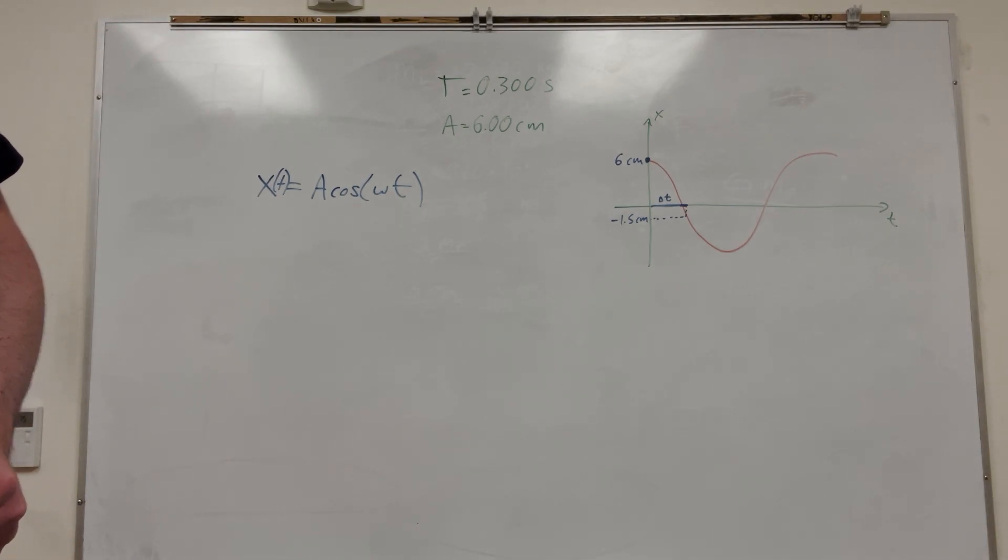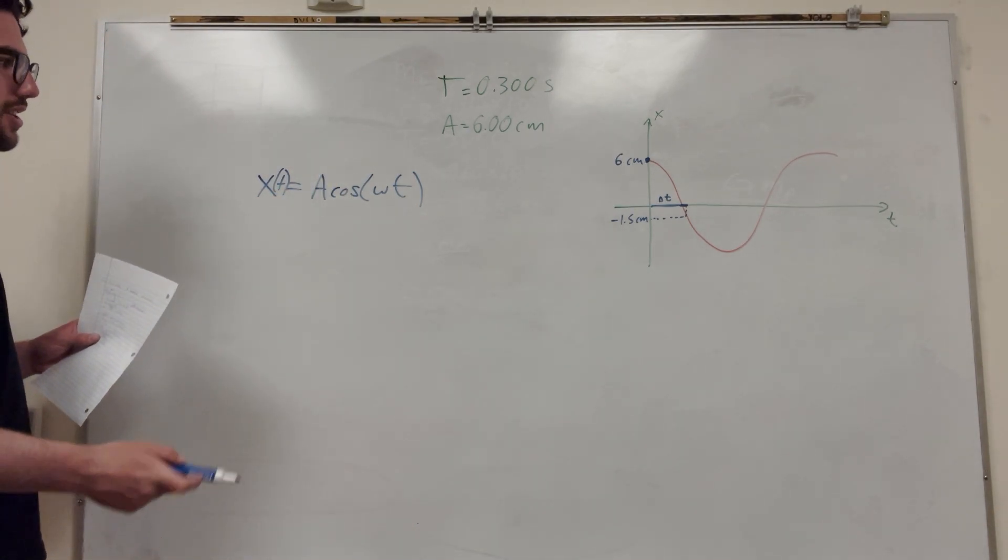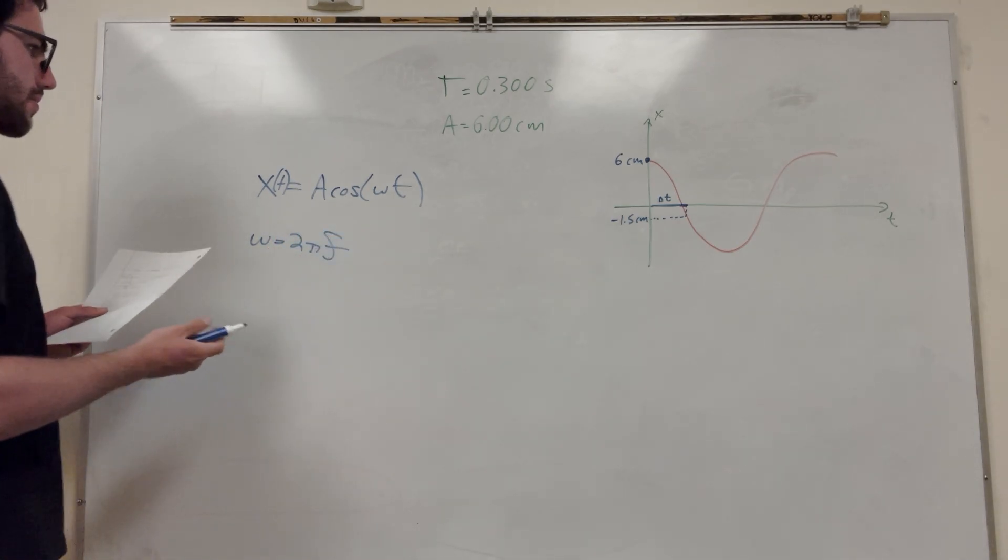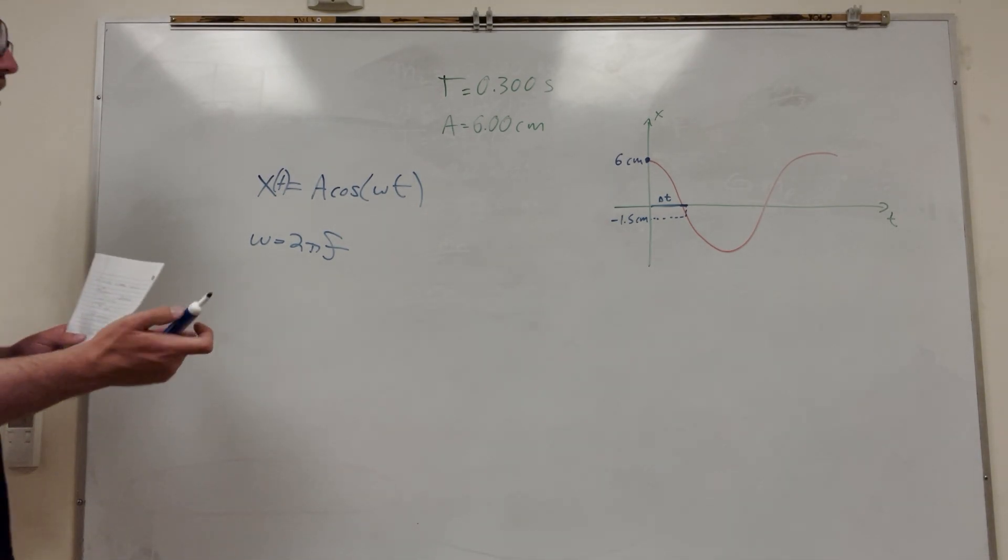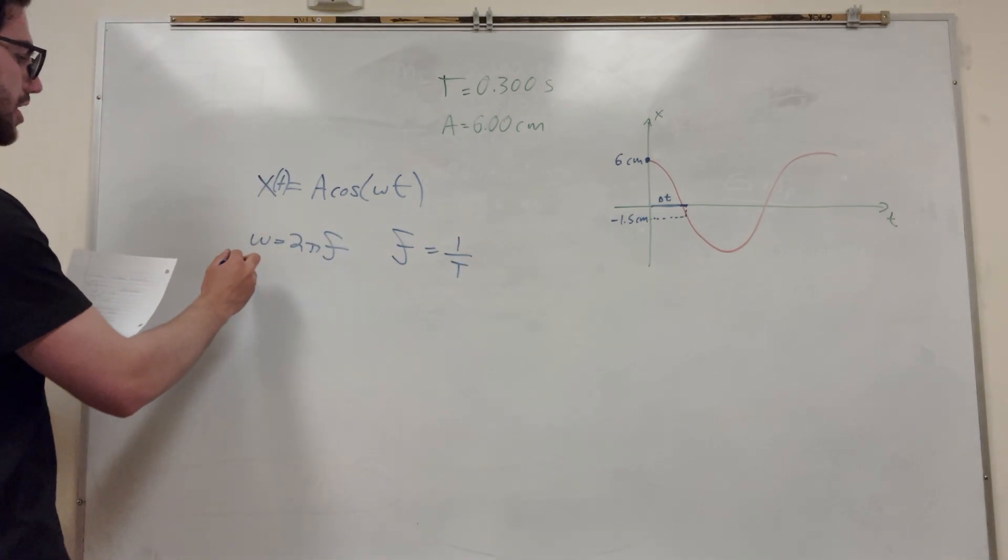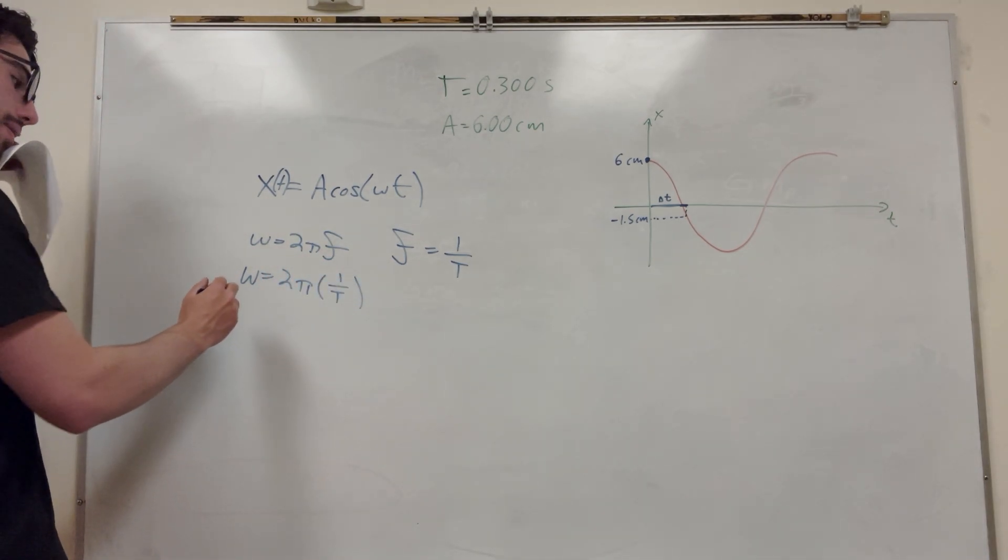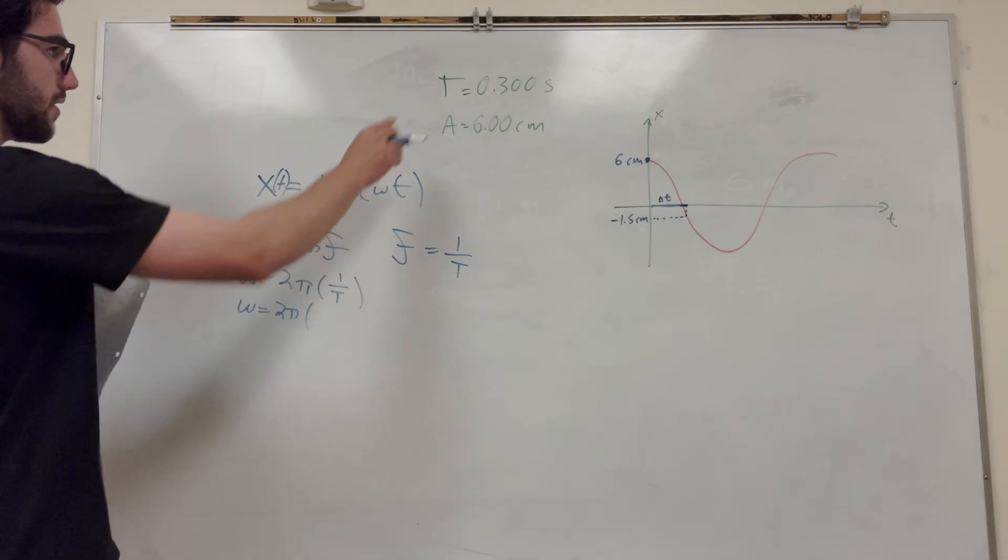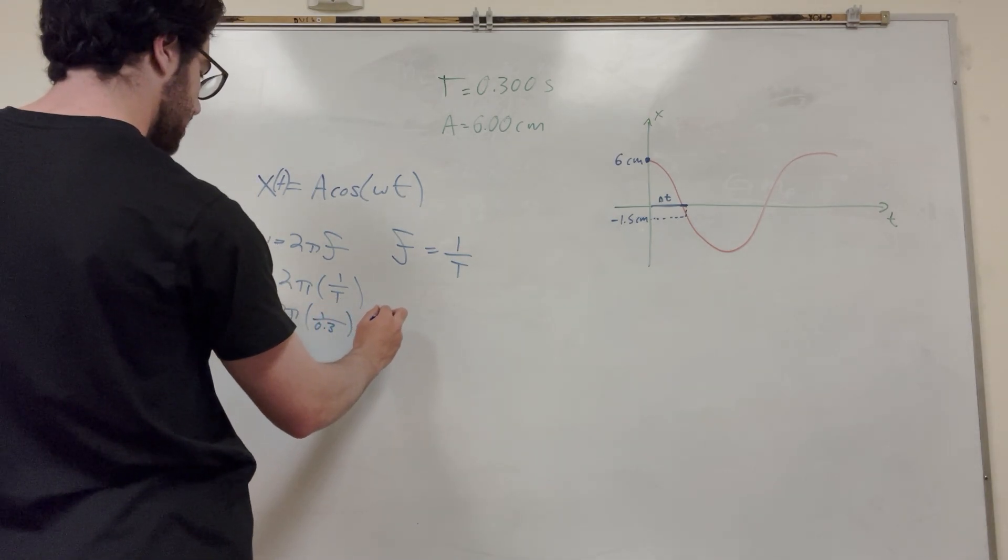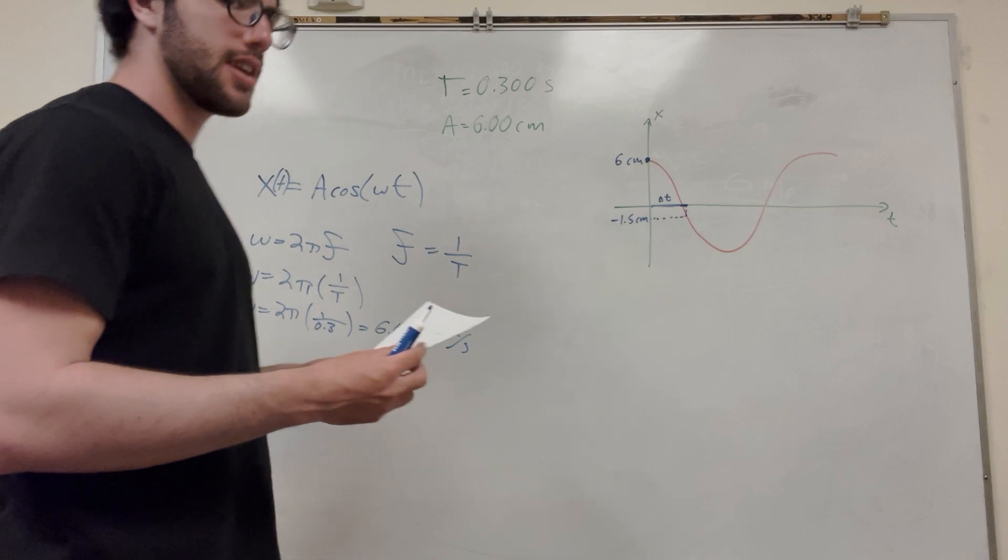But what we're going to do is, yes, angular frequency. I don't know why I'm saying angular velocity, but anyway, we have an equation for this. So w is equal to 2 pi times the frequency. So we don't have the frequency, but we have the period. And we know that frequency is the inverse of period. So frequency is 1 over T. So we can rewrite this equation as w is equal to 2 pi times 1 over T. And then we have all this stuff. So w is going to be equal to 2 pi, and then our T value is what we were given. This is 1 over 0.3. And if you solve this, you're going to get 6.67 pi radians a second. So we have that.